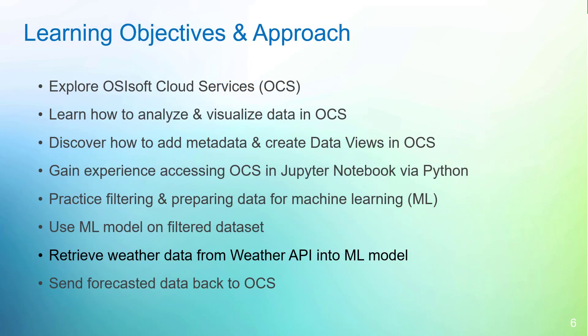This slide outlines the learning objectives and approach for this course. First, we will explore OCS and learn how to analyze and visualize data in OCS. We will discover how to add metadata and create data views, gain experience with OCS data in a Jupyter Notebook using Python, practice filtering data for machine learning, learn to use a machine learning model, discover how to retrieve weather data from the OpenWeather API, and finally understand how to send data back to OCS.